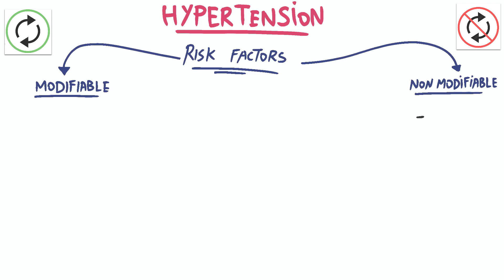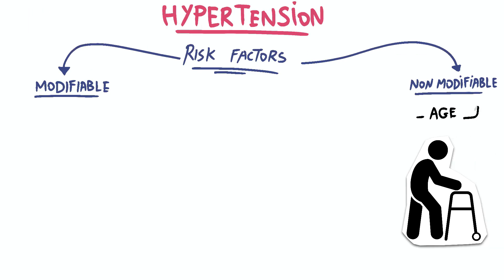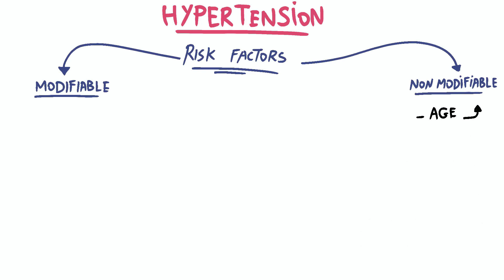One non-modifiable risk factor is age. As individuals grow older, the blood vessels tend to lose their elasticity and become stiffer, which can lead to an increase in blood pressure. This is why hypertension becomes more common with advancing age.